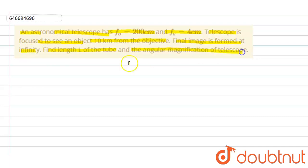So this question is based on the chapter ray optics. Here the focal length of objective lens is given 200 centimeter and the focal length of eyepiece lens is given 4 centimeter. And the object is placed at a distance of 10 kilometers from the objective lens.